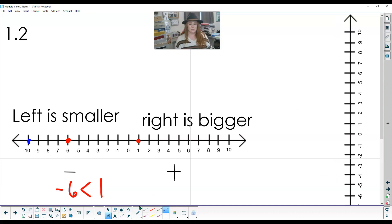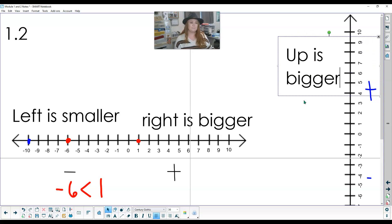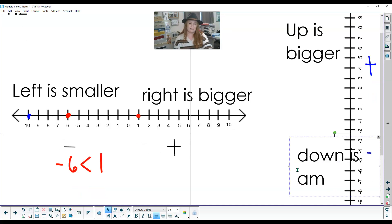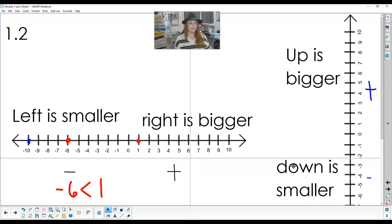So we also have our vertical number lines and our positive always goes up. Our negatives always go down. So when you go up is bigger. So the higher up it goes, the more it is like a thermometer. It gets hotter, hotter, hotter. If it goes down, it's getting colder, colder, colder. So that means when we go down is smaller. Up is bigger, down is smaller.